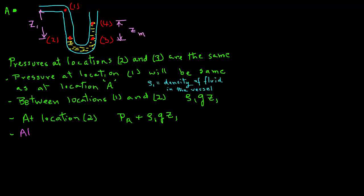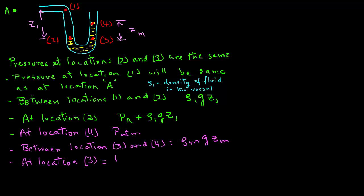On the right-hand side of the manometer tube, at location 4, we have the atmospheric pressure because the fluid there is exposed to the atmosphere. At location 3, the pressure will be Patm plus ρmgZm. ρm is the density of the manometer fluid, and Zm is the distance between locations 3 and 4.